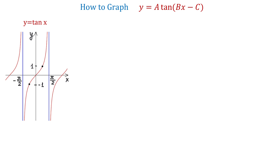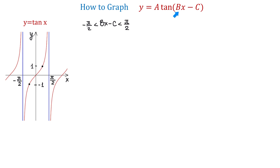Now, to find the values of x for which the function y equals a tangent of bx minus c completes one full period, we need to solve the following inequality: bx minus c is greater than negative pi over 2 and is less than positive pi over 2. So, if in this basic function over one period x is between negative pi over 2 and positive pi over 2, then in this function the expression bx minus c is between negative pi over 2 and positive pi over 2.